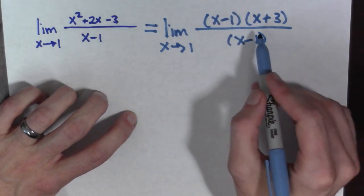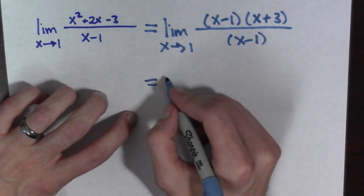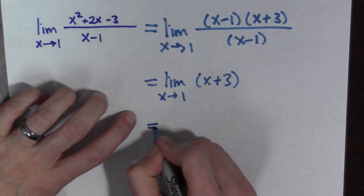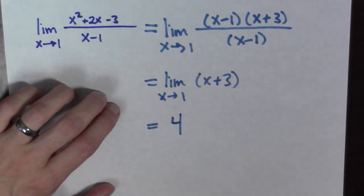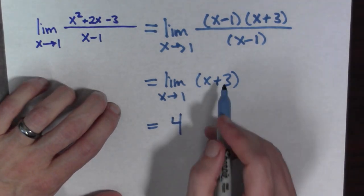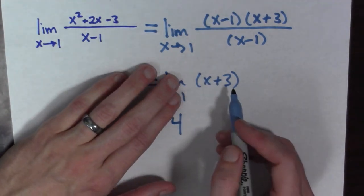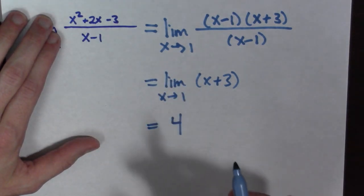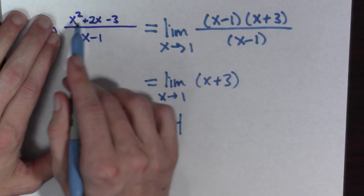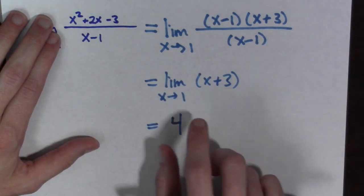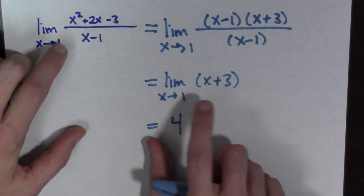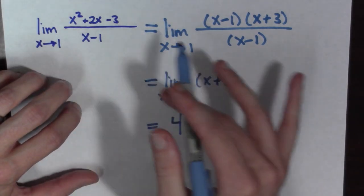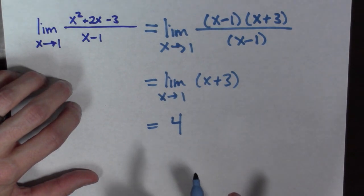Hence we can cancel these terms out, and we get the limit as x goes to 1 of x plus 3, and this is equal to 4. We should point out that x plus 3 as a function is not equal to x squared plus 2x minus 3 all over x minus 1, because when we evaluate x at 1 this one equals 4 and this one is undefined. However, near 1 but not equal to 1 these two functions agree, hence the limits are the same — this is a legal set of moves.